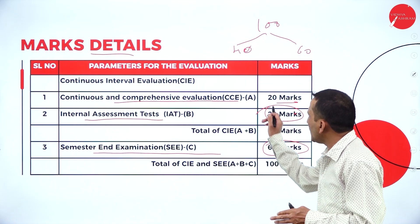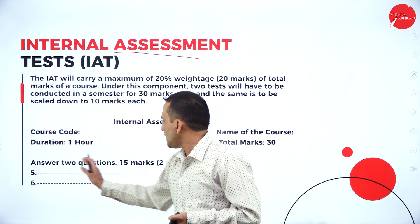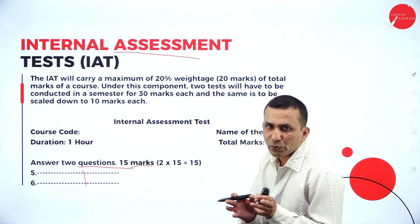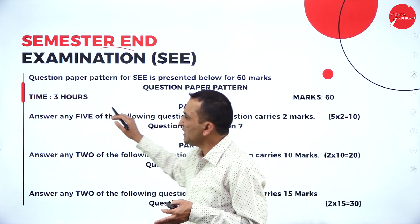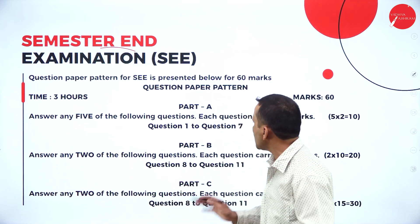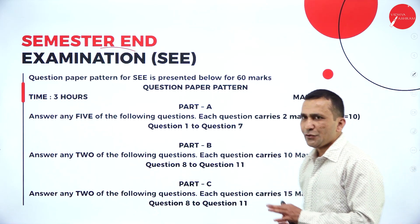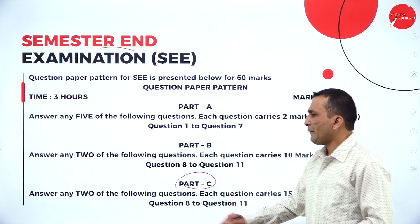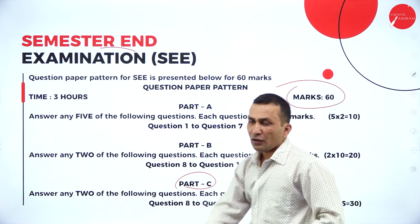The university question paper has three parts. Part A has seven questions; you need to attend any five, each carrying 2 marks — so 10 marks total. Part B has four questions; attend any two, each carrying 10 marks — so 20 marks. Part C has four questions; attend any two, each carrying 15 marks — so 30 marks. Altogether, the total external paper is 60 marks. The same pattern was followed in previous semesters.